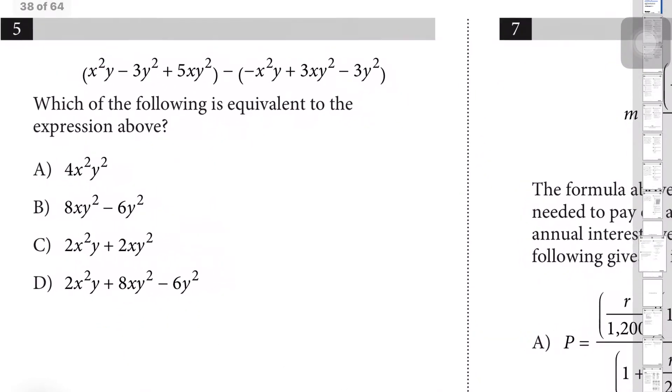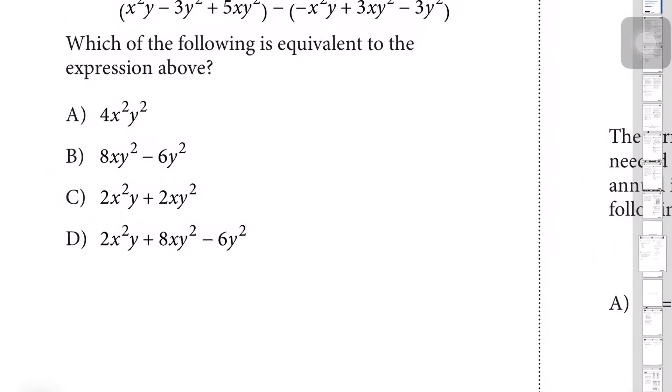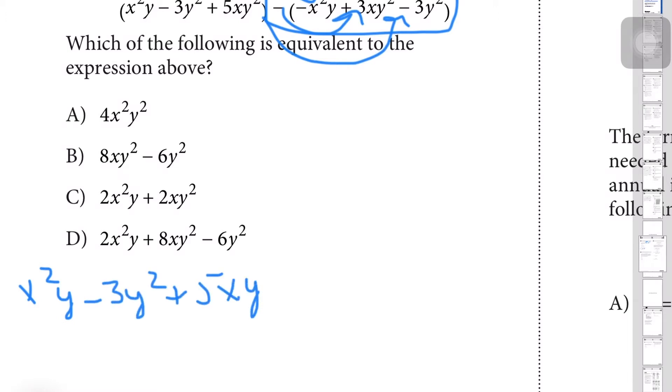Question number 5: which of the following is equivalent to the expression above? You have your expression above, and for this one you have to remove the brackets and distribute the negative to each of the following. So your first part stays the same: x²y - 3y² + 5xy². Minus minus becomes a plus: x²y. And a plus becomes a minus: -3xy². Plus 3y² because the negative and negative become a positive.